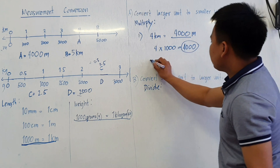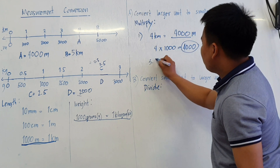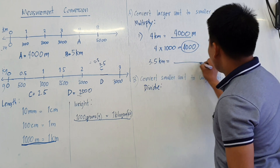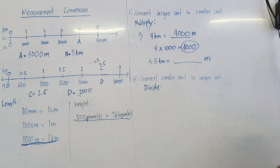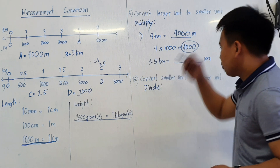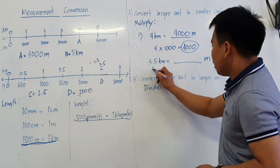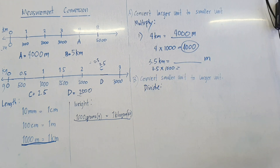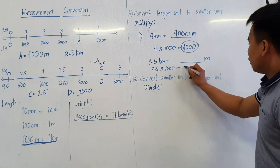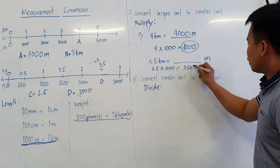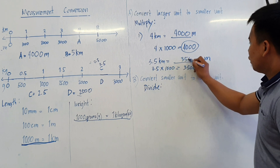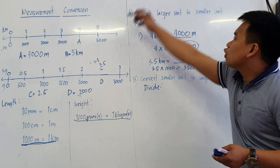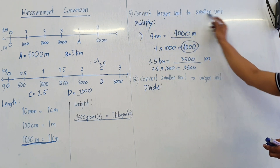Another example: 3.5 kilometers to meters. So what are we going to do? The same. We have 3.5 times 1,000. So multiply: 3,500. So that's the answer. This is how you convert the larger unit to a smaller unit — we need to multiply.